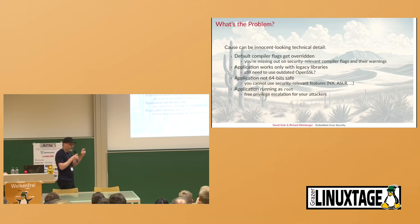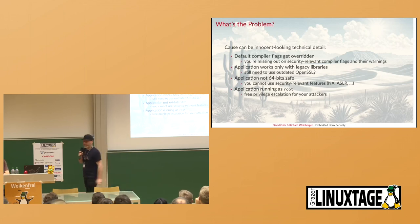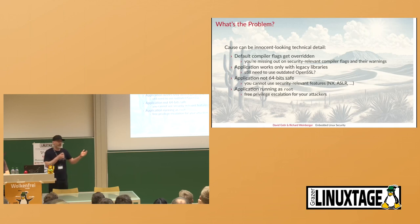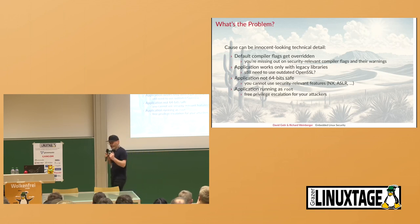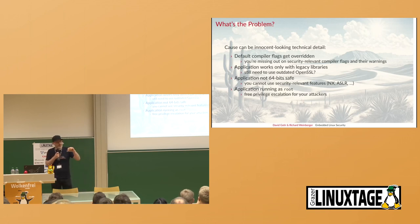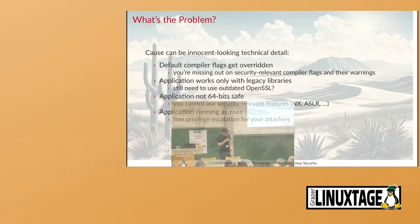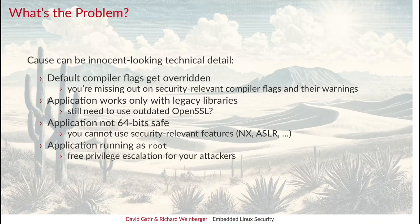Even innocent-looking technical issues can be the cause of a major vulnerability down the road. For example, when building your application, the Yocto Project already has great compiler flags configured. But if you start overwriting them instead of appending to them, you could inadvertently disable warnings that are security-relevant — because you have to extend and append your compiler flags, not overwrite them.